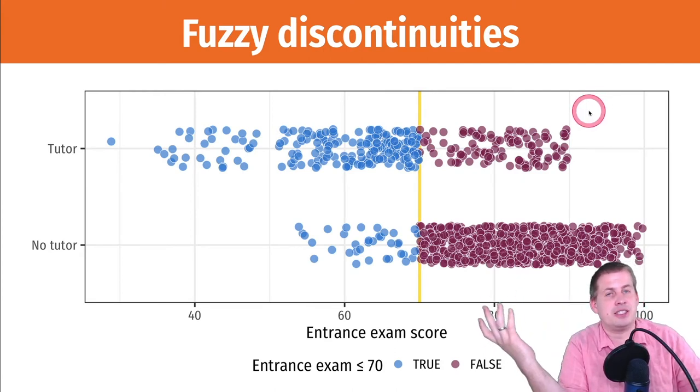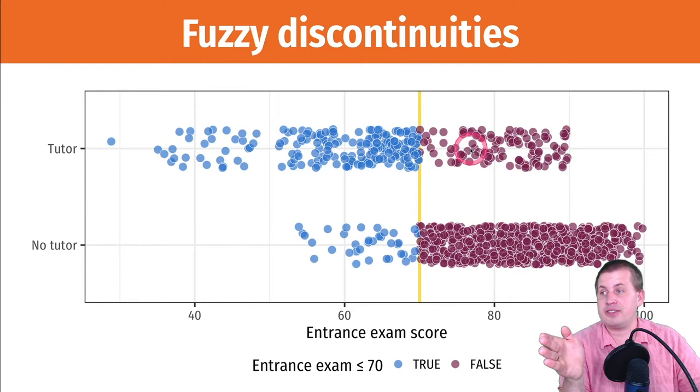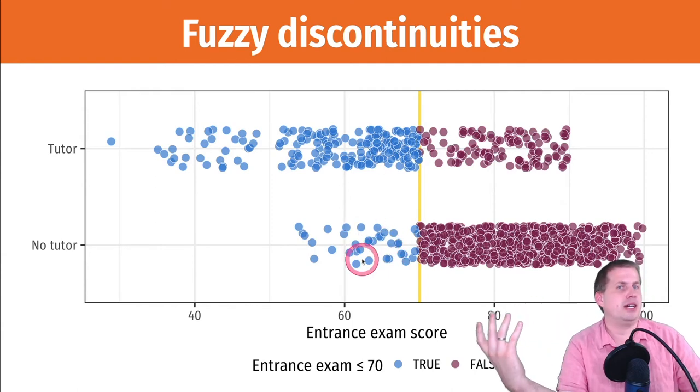In that session, our main focus was on sharp discontinuities, where if you scored above 70, you did not get a tutor, and if you scored below 70, you did get a tutor.